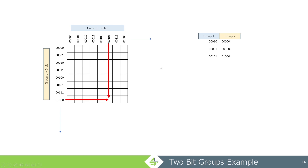Bit grouping is quite interesting because it minimizes the number of chests required to encode a single item type. For every group that you have, there will probably be one item per item type in it. Right now if I have two bit groups I usually have around two items per item type, and that allows me to do further optimizations which I'll show later. But these bit groupings don't have to be this way — you can do it in a different fashion.